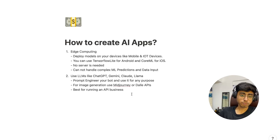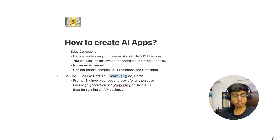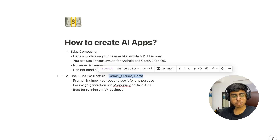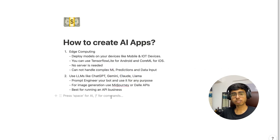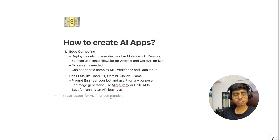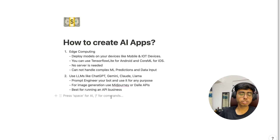The second way is to use LLMs like ChatGPT, Gemini, Claude, and Llama. These large language models are from various companies — Gemini is by Google, ChatGPT is by OpenAI. To create applications this way, you need prompt engineering. It's a new domain where you become an expert in giving commands to an LLM. You prompt engineer your bot and use it for any purpose — for example, to create an application that works as a virtual girlfriend, you would prompt engineer your model accordingly.